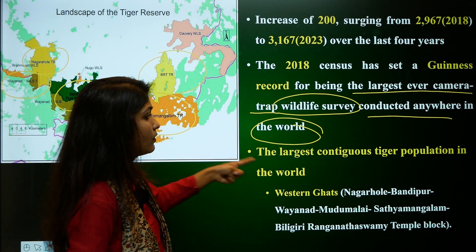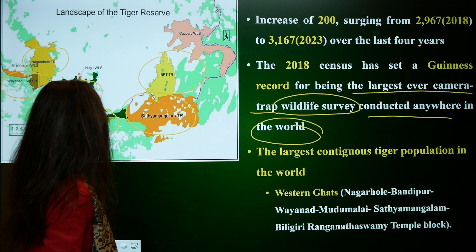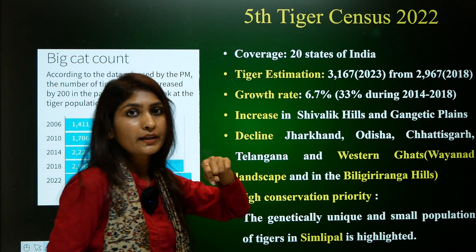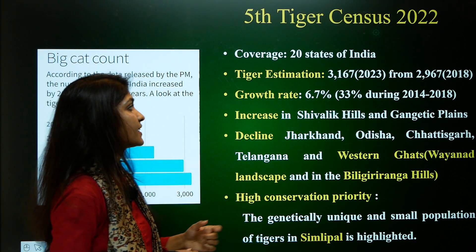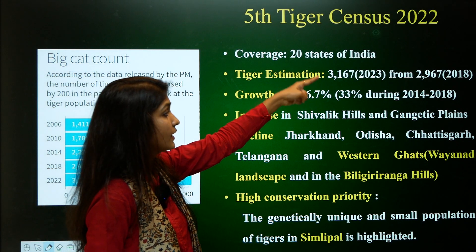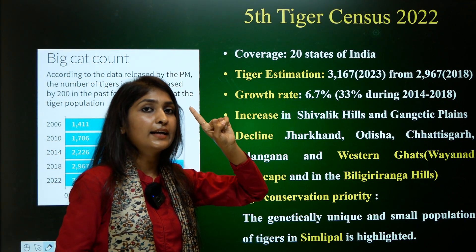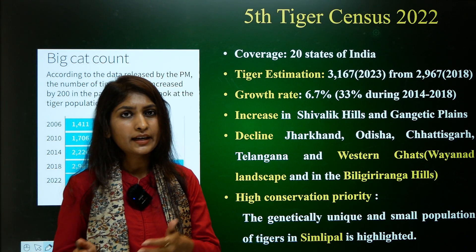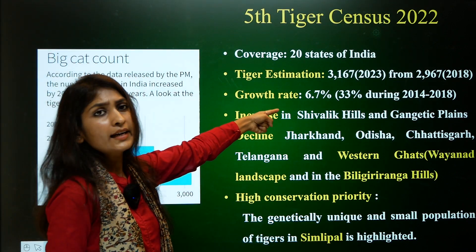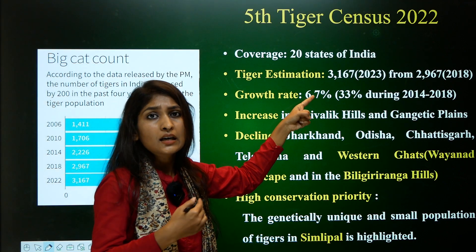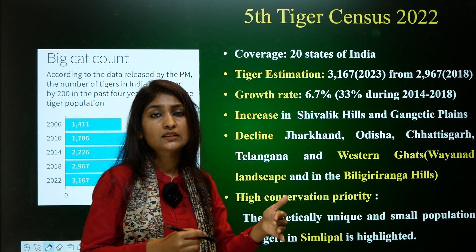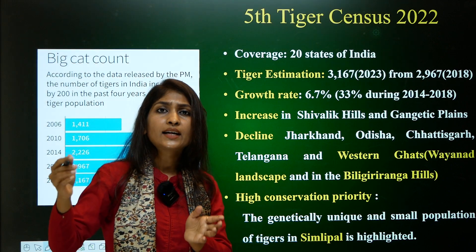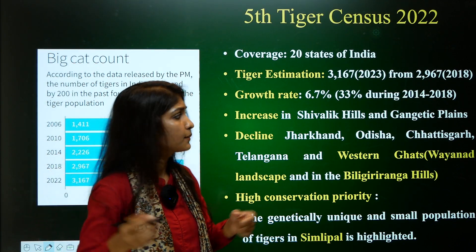The largest contiguous tiger population in the world is in the Western Ghats region. The fifth tiger census of 2022 covered 20 states. Tiger estimation stands at 3,167 in 2023 (from 2,967 in 2018), representing an addition of 200 tigers. Unfortunately, the growth rate was reduced to 6.7% from the fourth to fifth census (2018–2022), contrasting with 33% growth from the third to fourth census (2014–2018).